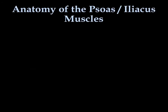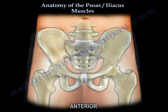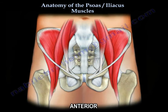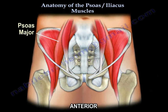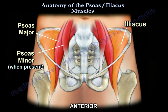Anatomy of the psoas iliacus muscle is very interesting. You have the psoas major and sometimes psoas minor when present, and then you have the iliacus muscle.